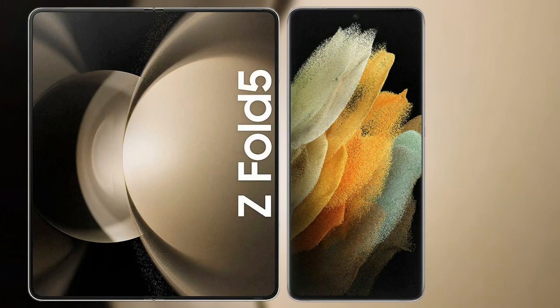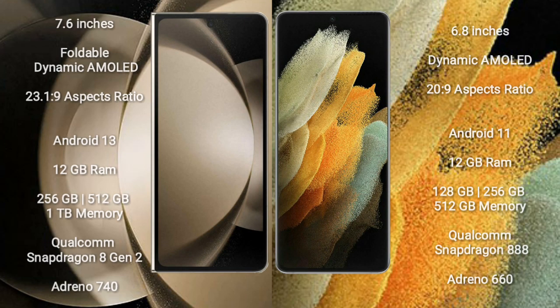I will compare the new Samsung Galaxy Z Fold 5 with Samsung Galaxy S21 Ultra. Samsung Galaxy Z Fold 5 comes with a 7.6-inch foldable dynamic AMOLED display with an aspect ratio of 23.1:9. Samsung Galaxy S21 Ultra comes with a 6.8-inch dynamic AMOLED display with an aspect ratio of 20:9.